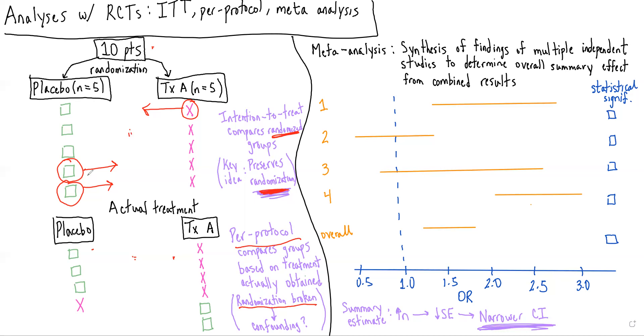For example, maybe these two patients who were initially randomized to placebo but ended up getting treatment A were the sicker of the patients in this study. They were so sick that they couldn't just get placebo. They actually needed an active treatment.